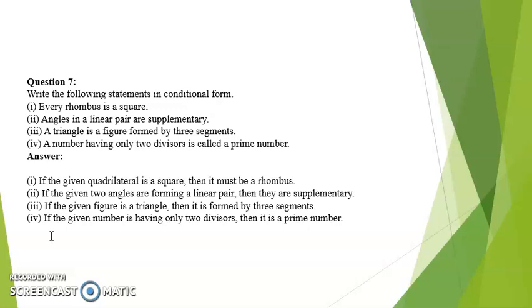Fourth: a number having only two divisors is called a prime number. The conditional statement: if the given number has only two divisors then it is a prime number.